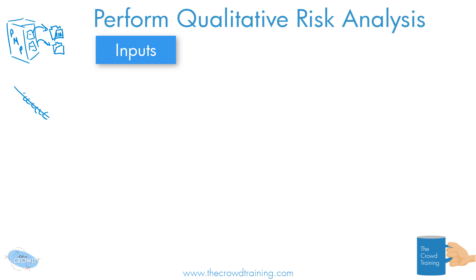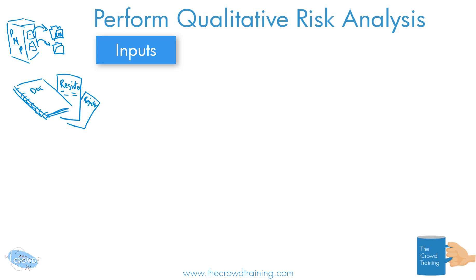You're also going to use a variety of project documents, but really for the most part that is going to be your risk register, because the risk register has the identified risks on it, maybe some categorization, maybe even a listing of who is the owner or who discovered it, who raised it. You can also have the stakeholder register, assumption log, and some other documents — all useful in helping us analyze the risks.